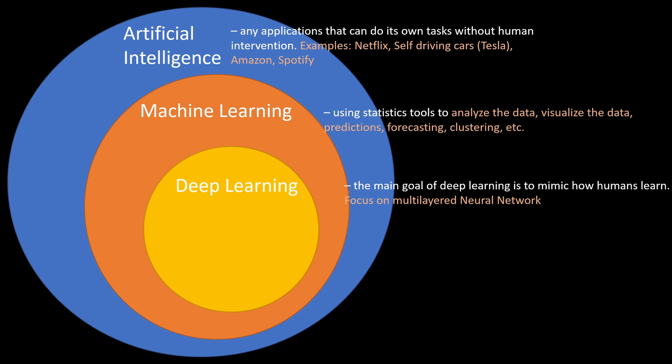We're not exactly mimicking how the human brain works, but we're trying to learn the main ideas from how the human brain works so that we can apply it to coding and deep learning. And deep learning is mainly focused on multi-layered neural networks, right?